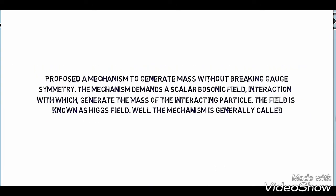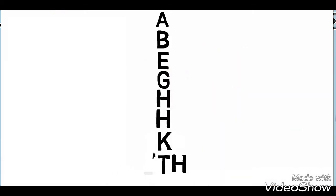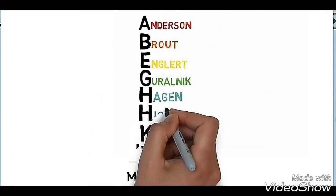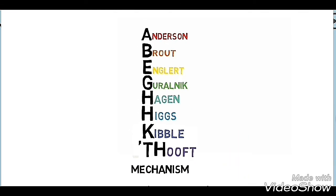The mechanism demands a scalar bosonic field interaction with which generates the mass of the interacting particle. The field is famously known as the Higgs field. The mechanism is generally called Higgs mechanism or ABEGHH KT mechanism, which stands for Anderson, Brout, Englert, Guralnik, Hagen, Higgs, Kibble, and 't Hooft mechanism.